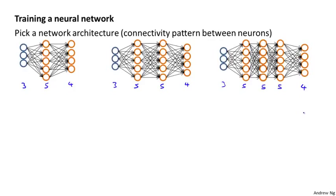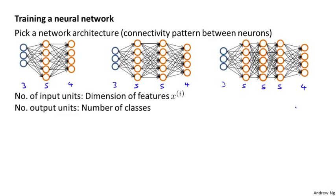So how do you make these choices? The number of input units is pretty well defined — once you've decided on a fixed set of features x, the number of input units will just be the dimension of your features x. And if you're doing multi-class classification, the number of output units will be determined by the number of classes in your classification problem.